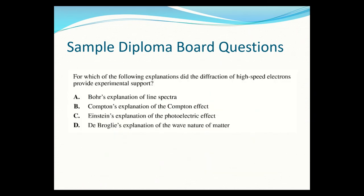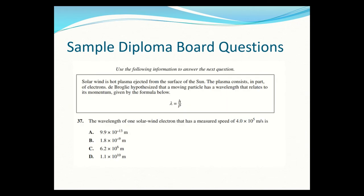The next question asks which explanation the diffraction of high-speed electrons provides experimental support for. That was de Broglie — it supports the wave nature of matter.